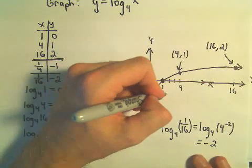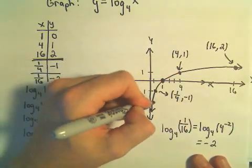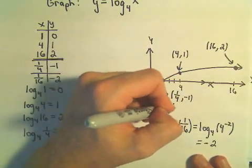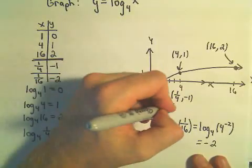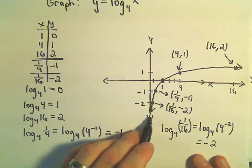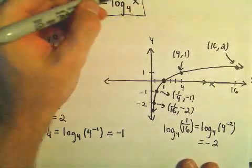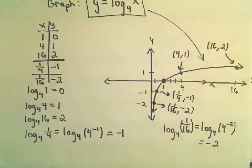So let's label a few points here. I think we said this would be (1/4, -1). This point down here would be 1 over 16 comma negative 2. If you plug in 1 over 32, you would be way down at negative 3, etc. So this is our basic graph of log base 4 of x.